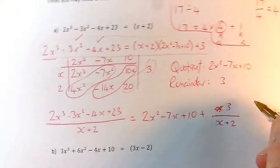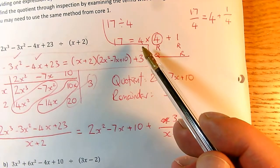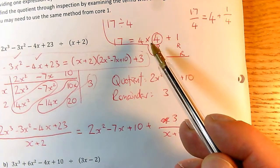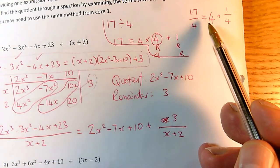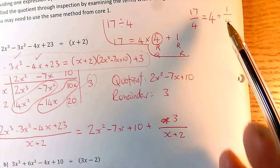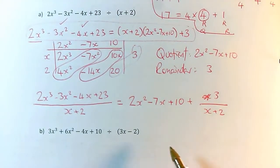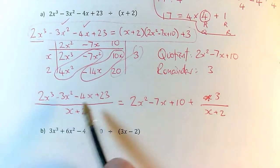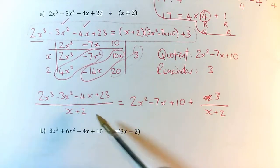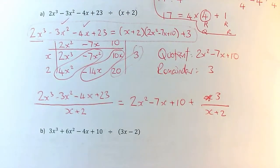And that should remind you of this way of writing 17 over 4. I could make 17 over 4 using 4s by doing 4 lots of 4, which is this 4 here. And then this remainder of 1, I have to write as 1 over 4, because that bit doesn't come out exactly when I divide by 4. So that's the same thing that's going on here. We have the answer to the division is the quotient, and then plus the remainder divided by the bracket I was dividing by.